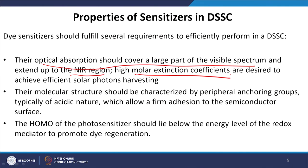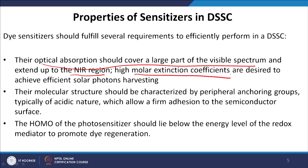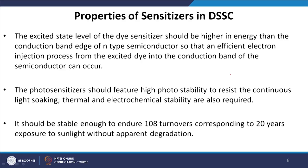The molecular structure should feature peripheral anchoring groups, typically of acidic nature (such as COOH), which allow firm adhesion to the semiconductor surface. The HOMO (highest occupied molecular orbital) of the photosensitizer should lie below the energy level of the redox mediator to promote dye regeneration. The excited state level of the dye sensitizer should be higher in energy than the conduction band edge of the n-type semiconductor, so that efficient electron injection from the excited dye into the conduction band of the semiconductor can occur.